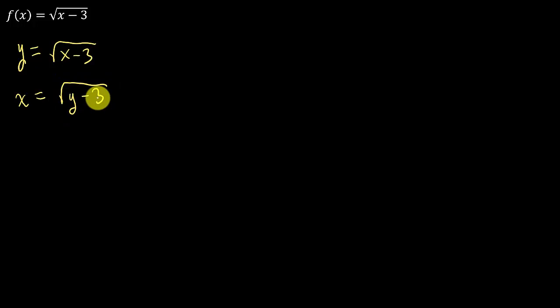And then we solve for y. So to solve for y here, what do we need to do? We need to square both sides. After we square both sides, that's going to give us x squared equals y minus 3. And then we will need to add 3 to both sides.